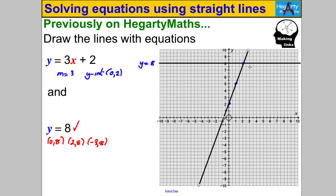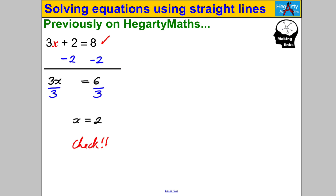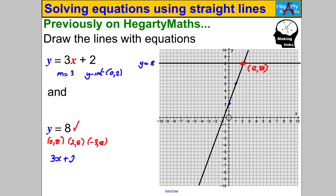These two lines intersect at coordinates x = 2, y = 8. Remember the first question — solve 3x + 2 = 8 — gave x = 2. When we drew y = 3x + 2 and y = 8, they also crossed where x = 2. So to solve equations graphically, draw each side as a straight line — where they intersect, the x-value is the solution. In exams, the lines are often pre-drawn and you must use graphical rather than algebraic methods.